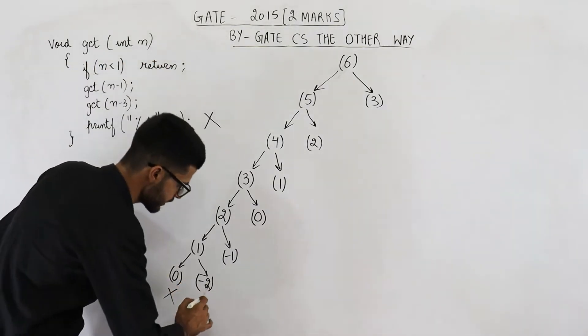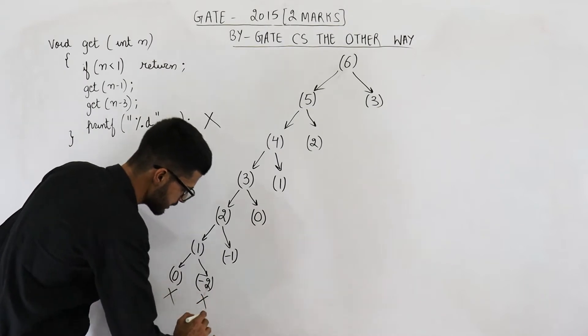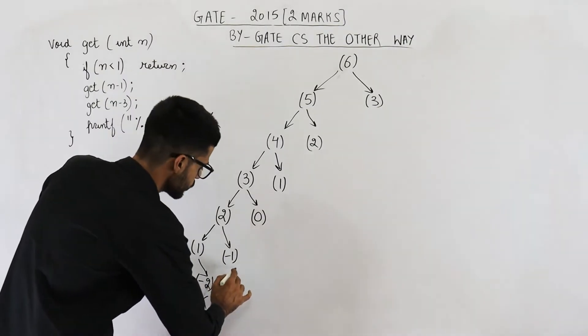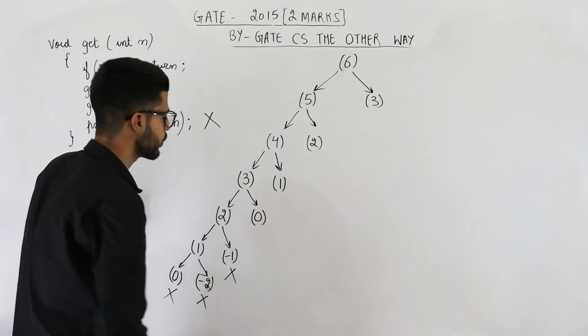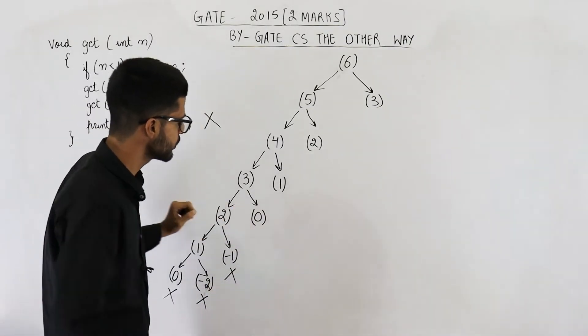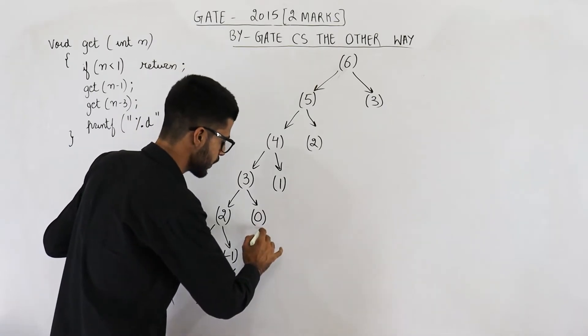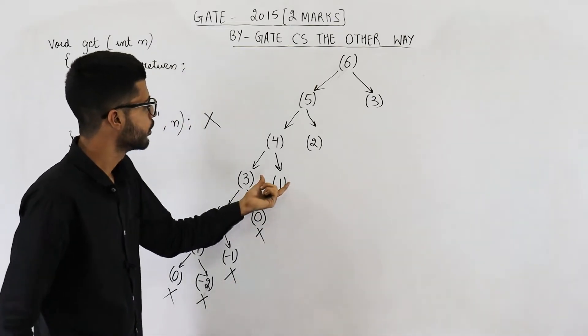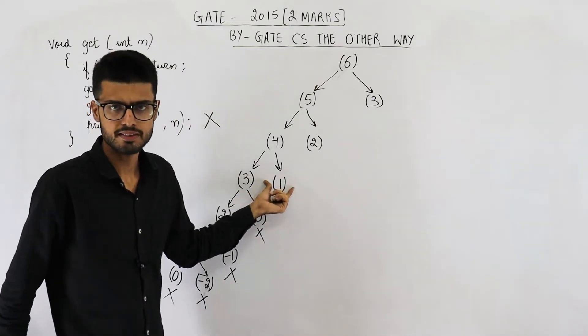Similarly, minus 2 is also less than 1, so it will also end. This one is also going to end. 0 is also less than 1, so it is also going to end. 1 is not less than 1, so this will not end.